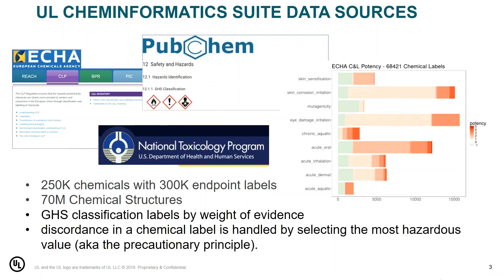GHS classifications are based on a weight of evidence analysis, so multiple types of data sources are involved in determining a GHS classification. For most of the endpoints we're looking at, we're looking at an extensive amount of animal data that was used to base those GHS classifications on. If a chemical has more than one GHS classification for the same endpoint, we handle this by selecting the most hazardous value. This might be called a precautionary principle or a conservative approach, but we believe that's the right way to do this because we want to make sure we don't misclassify a chemical if there's a potential for toxicity.